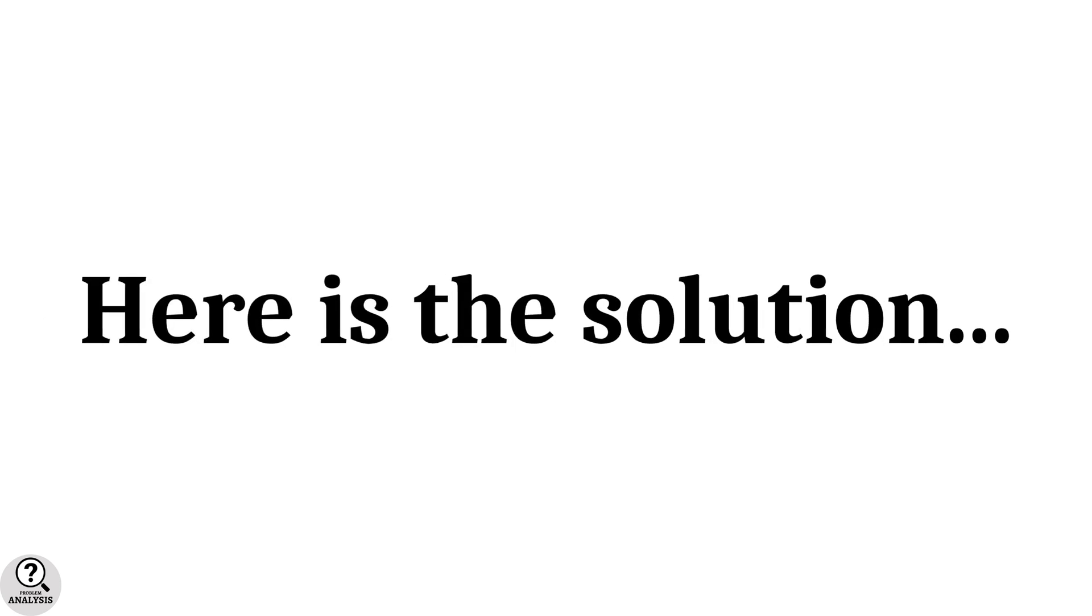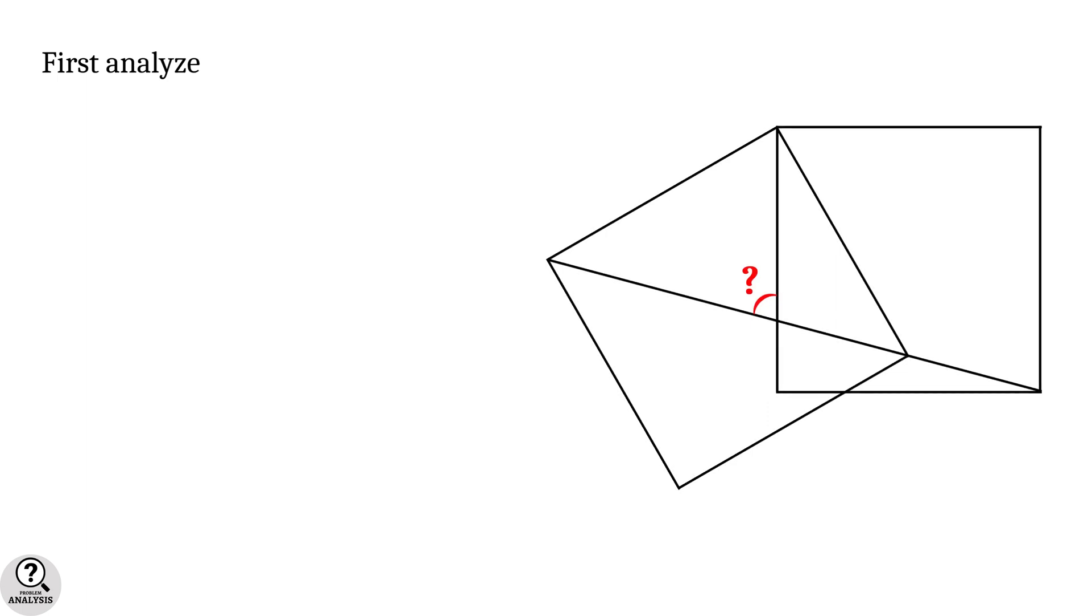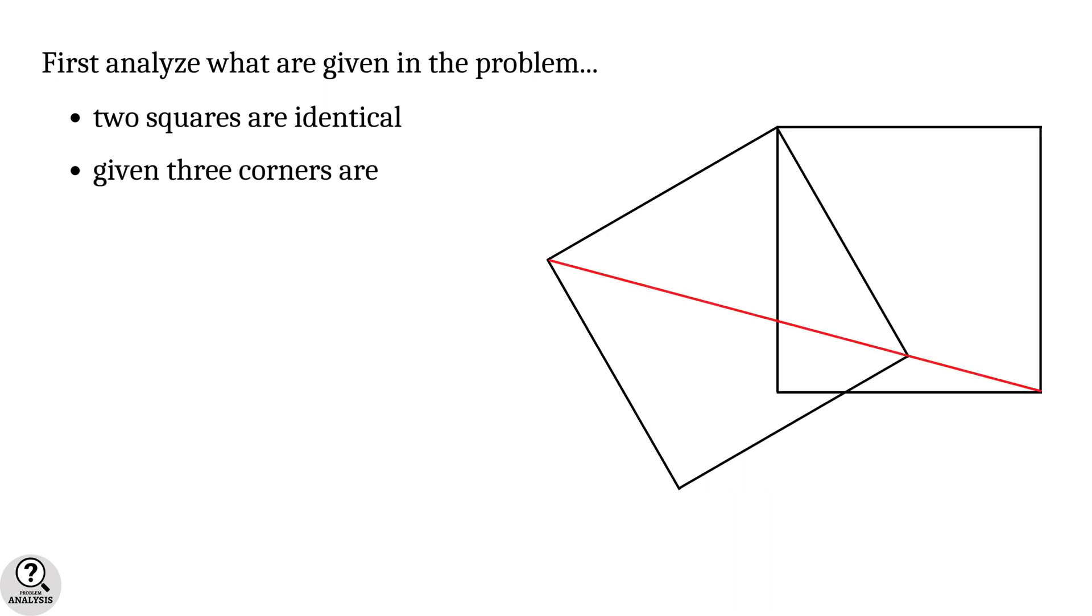And the solution is right here. First, let's analyze what are given in the problem. First of all, the two squares are identical. And then the given three corners are collinear.